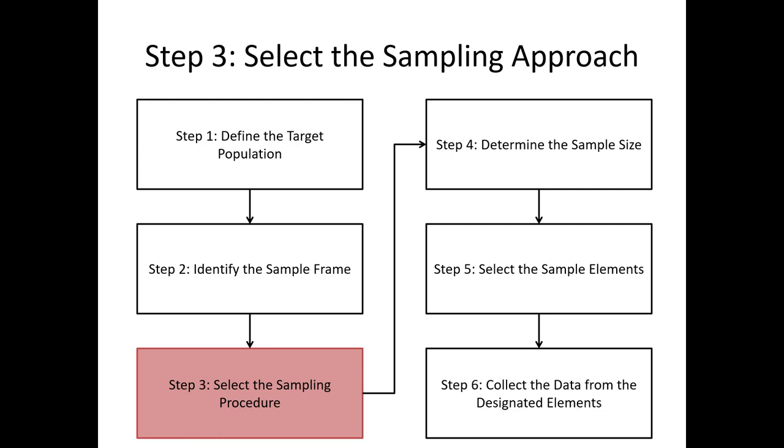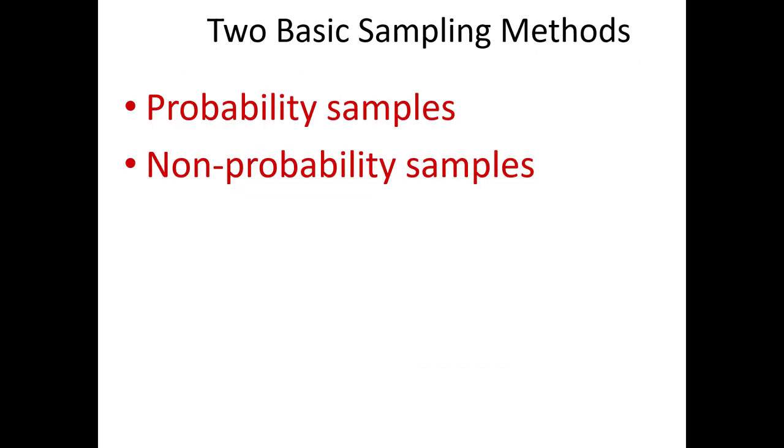Once we've defined the target population and identified the sampling frame that we'll be using, it's now time for us to select our sampling procedure. At a high level, there are two basic sampling approaches: probability samples and non-probability samples.